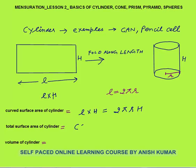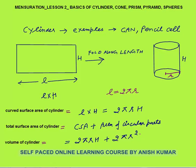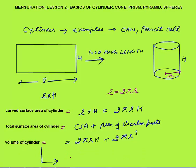Total surface area of cylinder equals curved surface area plus area of circular bases. Curved surface area is 2πrh, and area of each circular face is πr², so we add twice πr² — one circle on the top and one on the bottom. Volume of cylinder is how much water can come inside the cylinder. If radius is r and height is h, volume equals πr²h cubic centimeters.